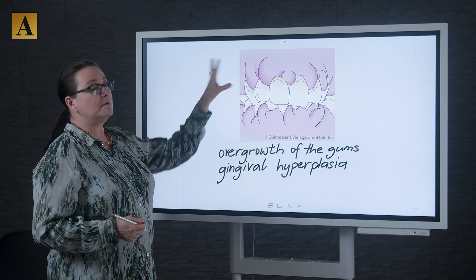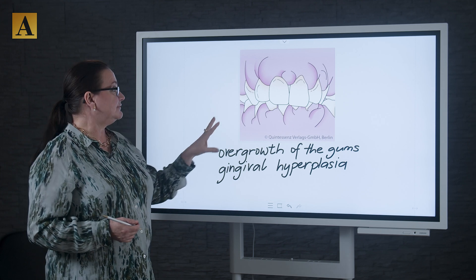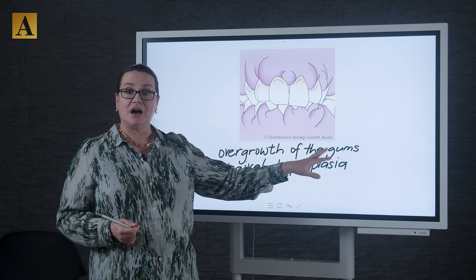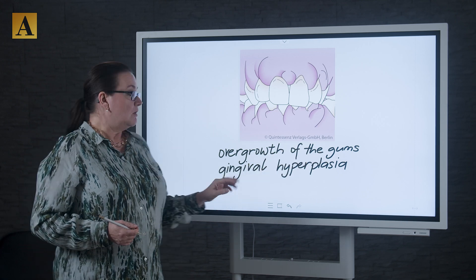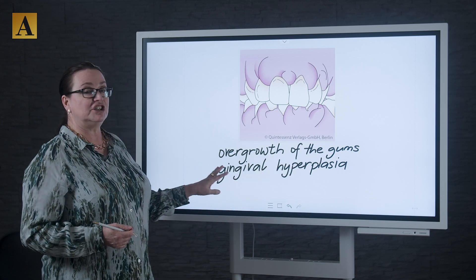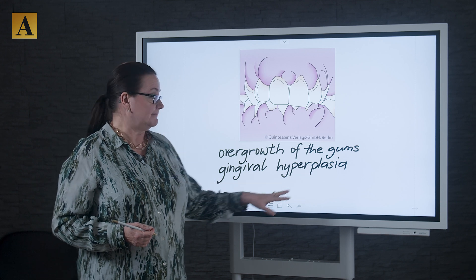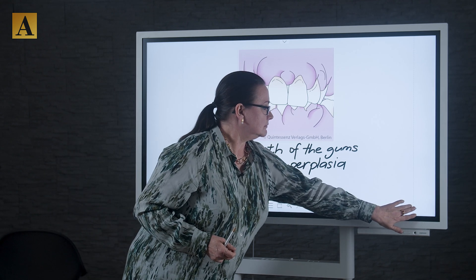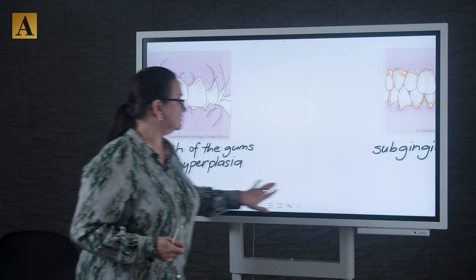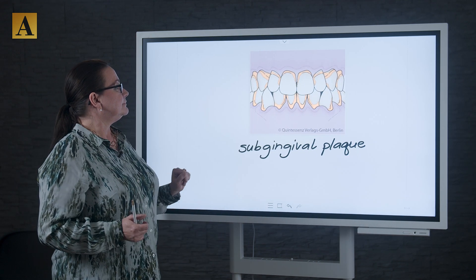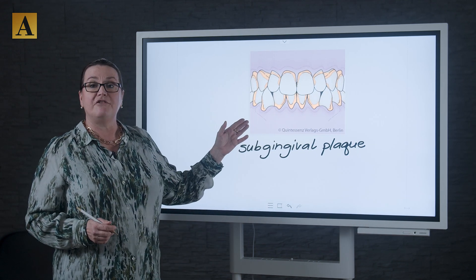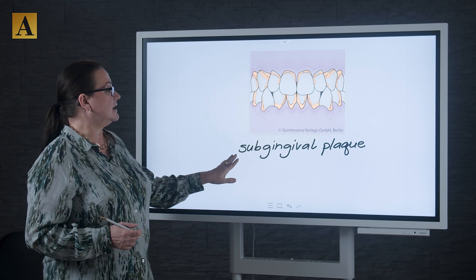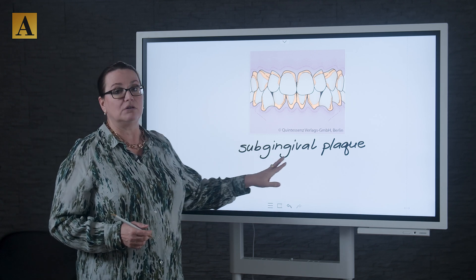If the gums have grown excessively, then we're talking about overgrowth of the gums, or the more technical term: gingival hyperplasia. If there is a buildup of plaque under the gum line, then we're talking about sub-gingival plaque.